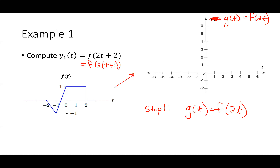My first step is to do the scaling. I treat 2T as the argument of the whole thing. I just have to take F of T and scale it down. If I'm trying to figure out what F of 2T looks like — forget the plus 1 part — just think about computing F of 2T. The scaling factor is 2, which is greater than one, so it compacts.